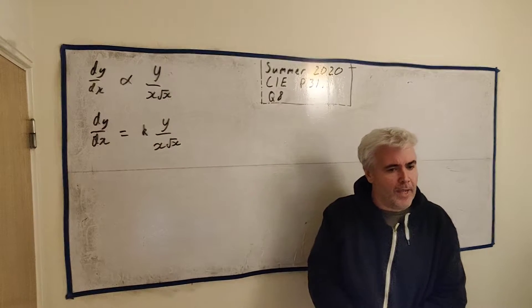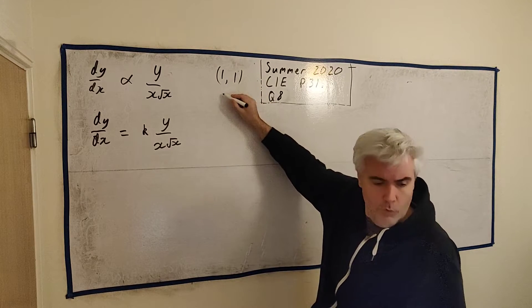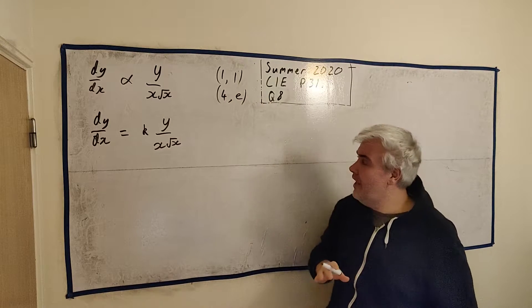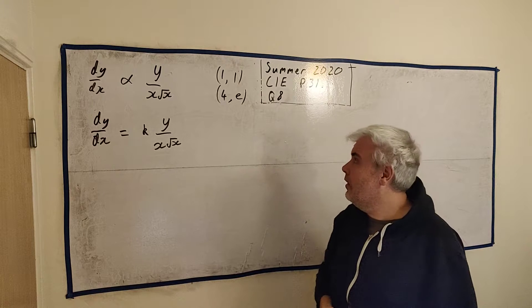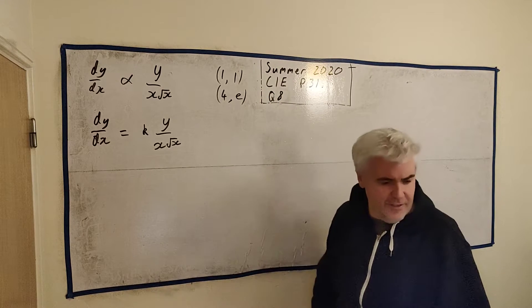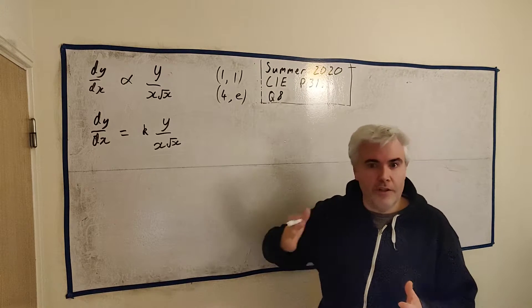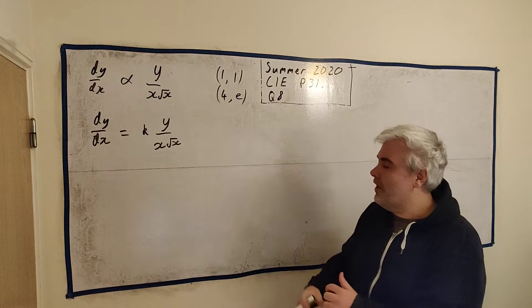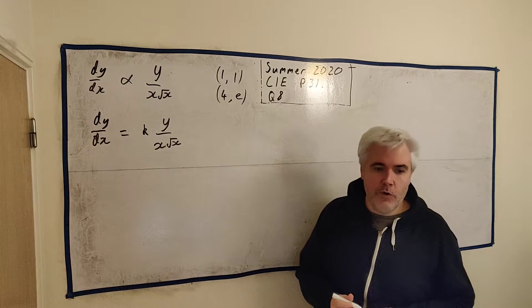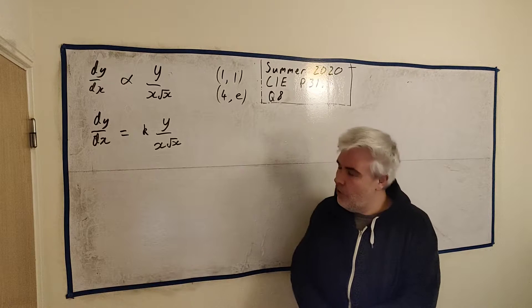So they also tell us that the curve passes through two points: (1, 1) and (4, e). Remember, e is a number. It's not a letter we don't know. It is a number. Put e to the power of 1 onto your calculator and it'll tell you what it is. I think it's 2.7. It's like pi, it never ends. Okay, so by setting up and solving a differential equation, find the equation of the curve expressing y in terms of x.